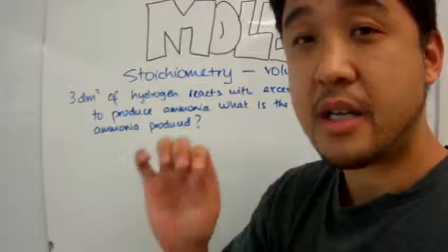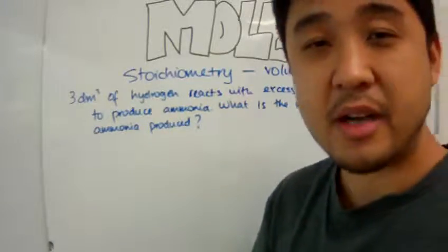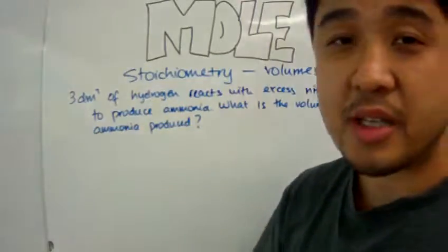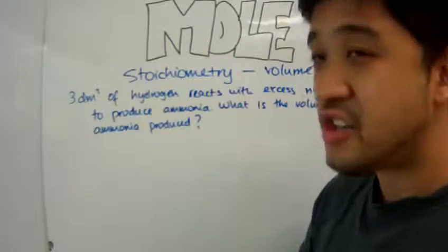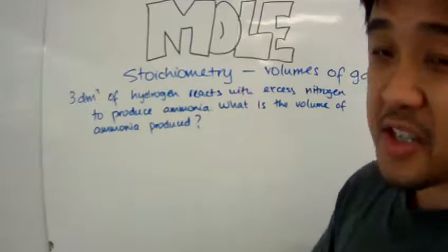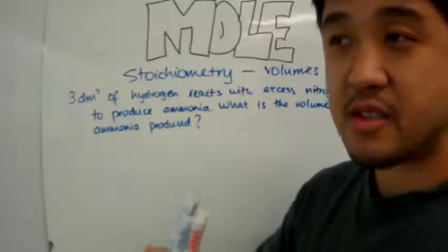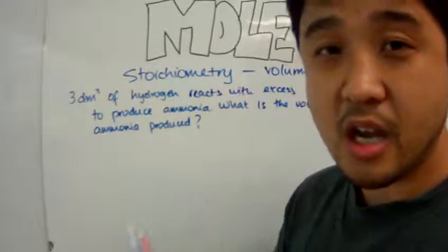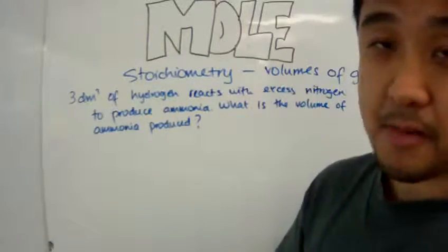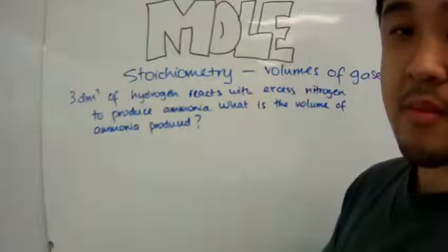Let's just boil down to the word problem that we have right now. Three cubic decimeters of hydrogen reacts with excess amounts of nitrogen, which is available in the air, to produce ammonia. What is the volume of ammonia produced?